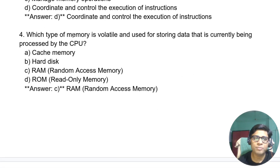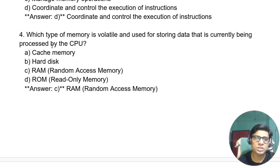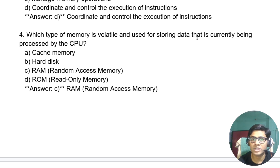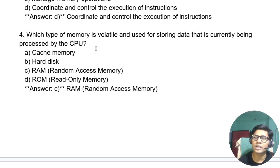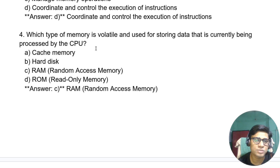Which type of memory is volatile and used for storing data that is currently being processed by the CPU? The answer is RAM. It is not permanently stored — it is temporary. RAM is used only when the CPU is working with it.